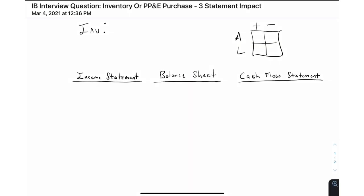Hello everyone and welcome back to our IB interview question review series. We're carrying on here and looking at the three statement impacts of particular events or items. Today we're going to focus on the purchase of inventory and PP&E. The first video in this series lays out a framework that we apply throughout all these videos, so I'd strongly recommend you check out that video first if you haven't already — I'll put a link in the description.